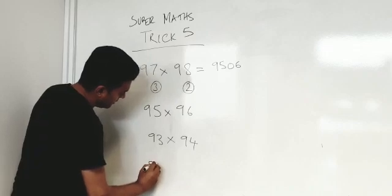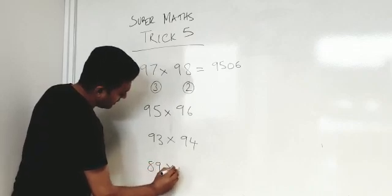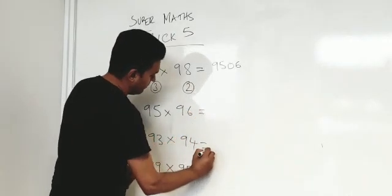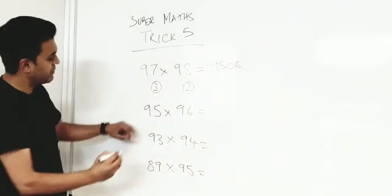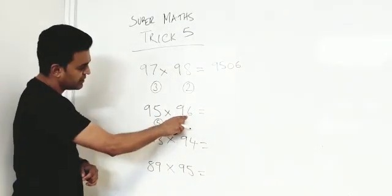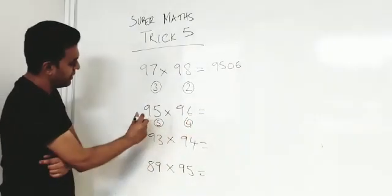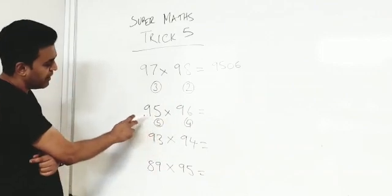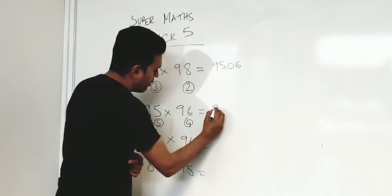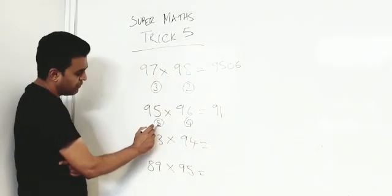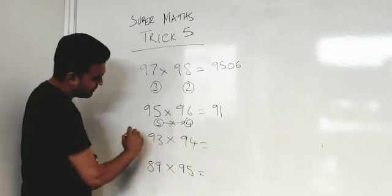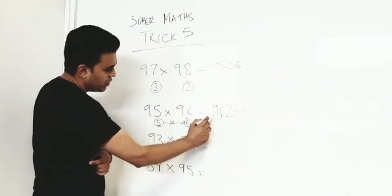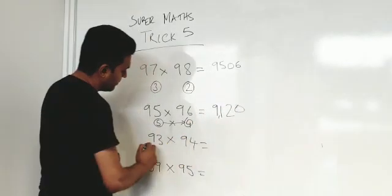Okay, watch. How close is 95 to 100? 5 away. How close is 96 to 100? 4 away. So if you take the 5 from 96 or the 4 from 95, you are left with 91. So 5 times 4 is 20. So the answer to 95 times 96 is 9,120.